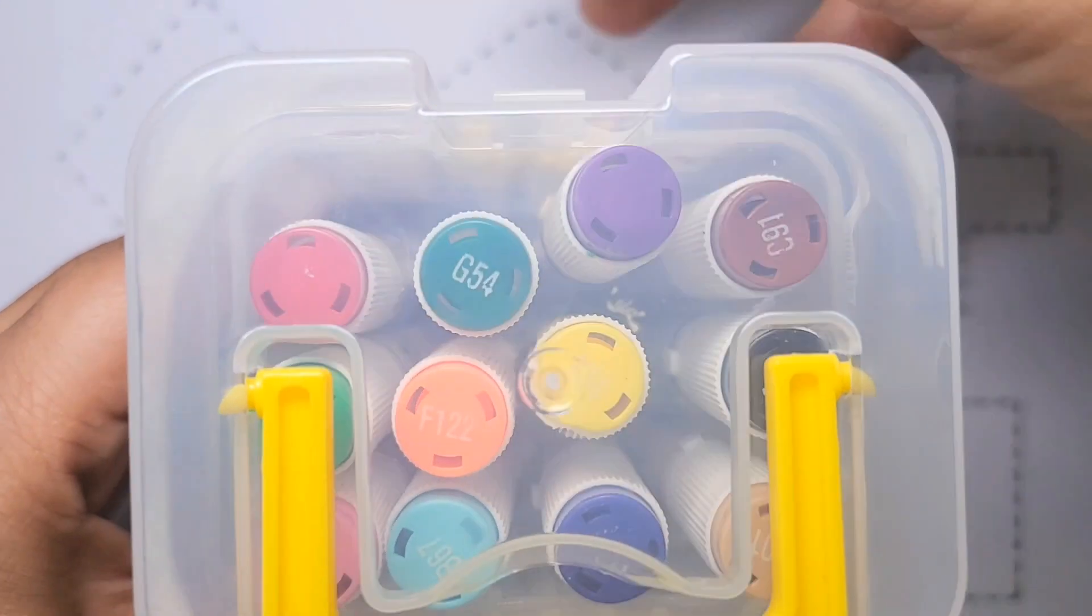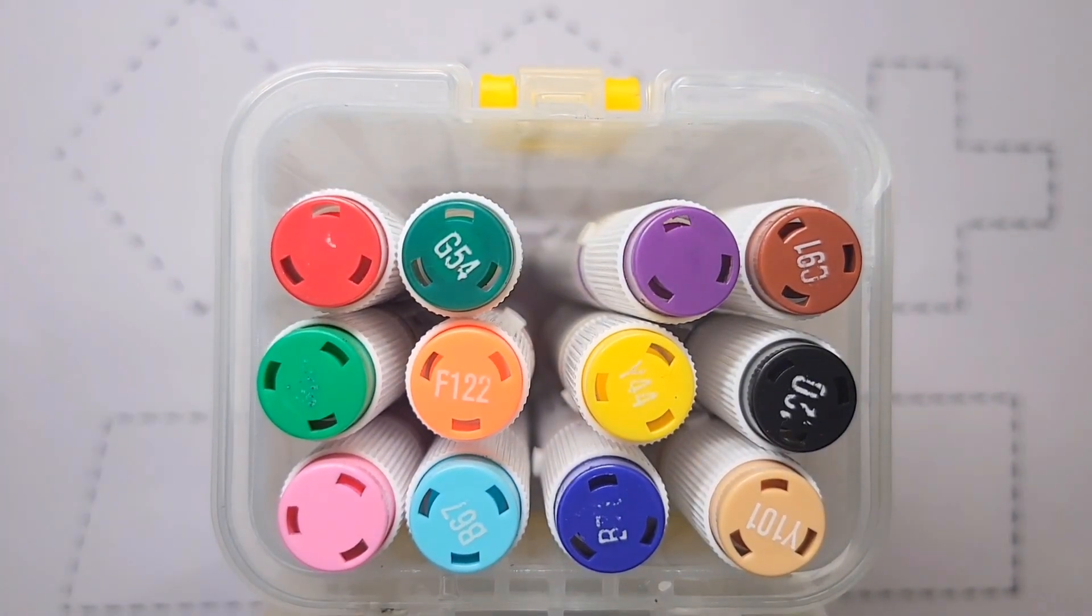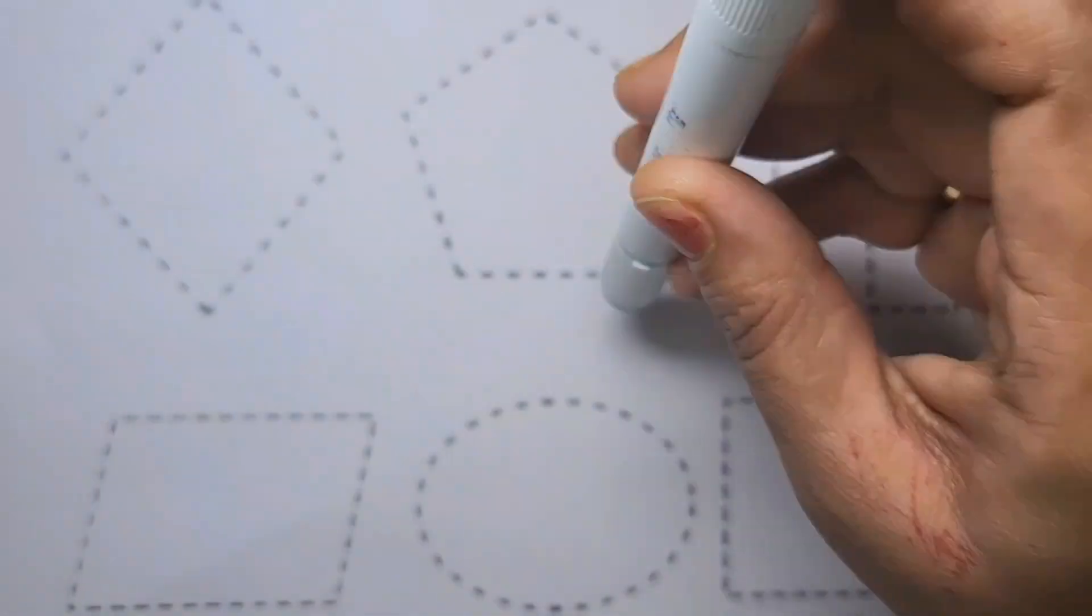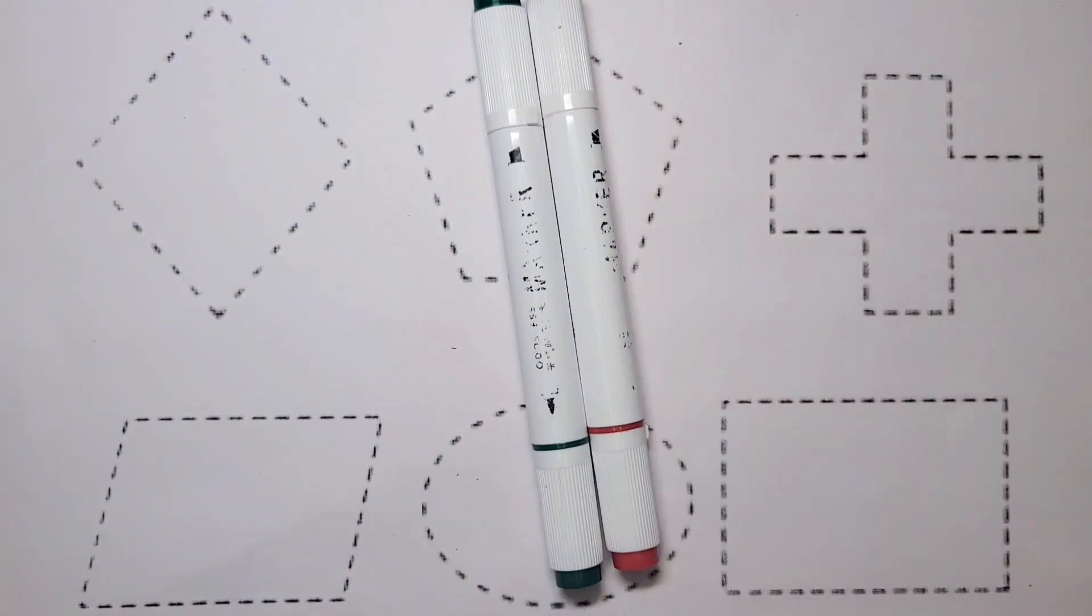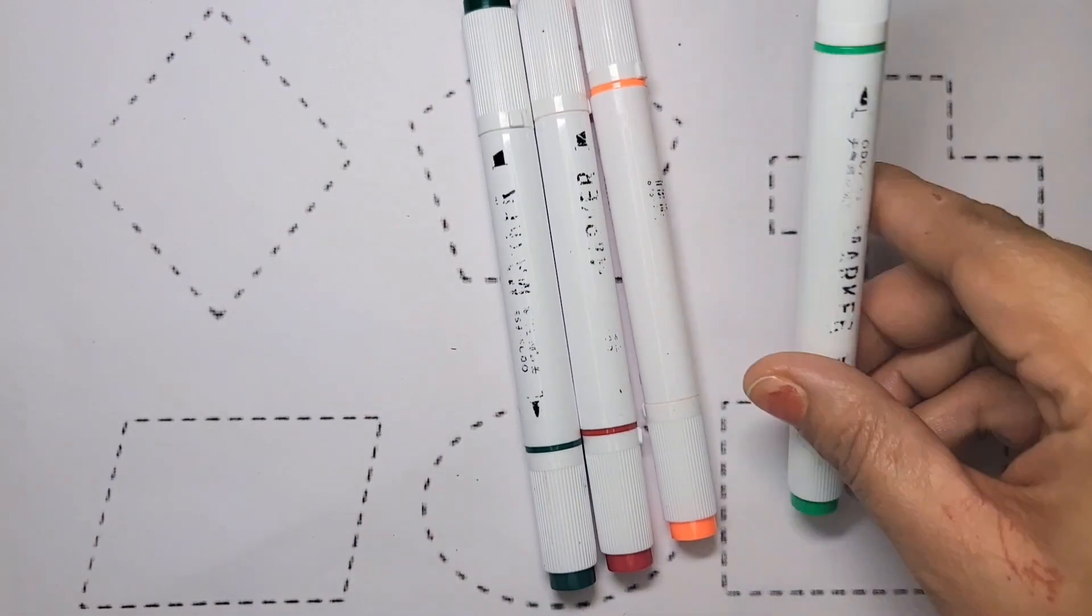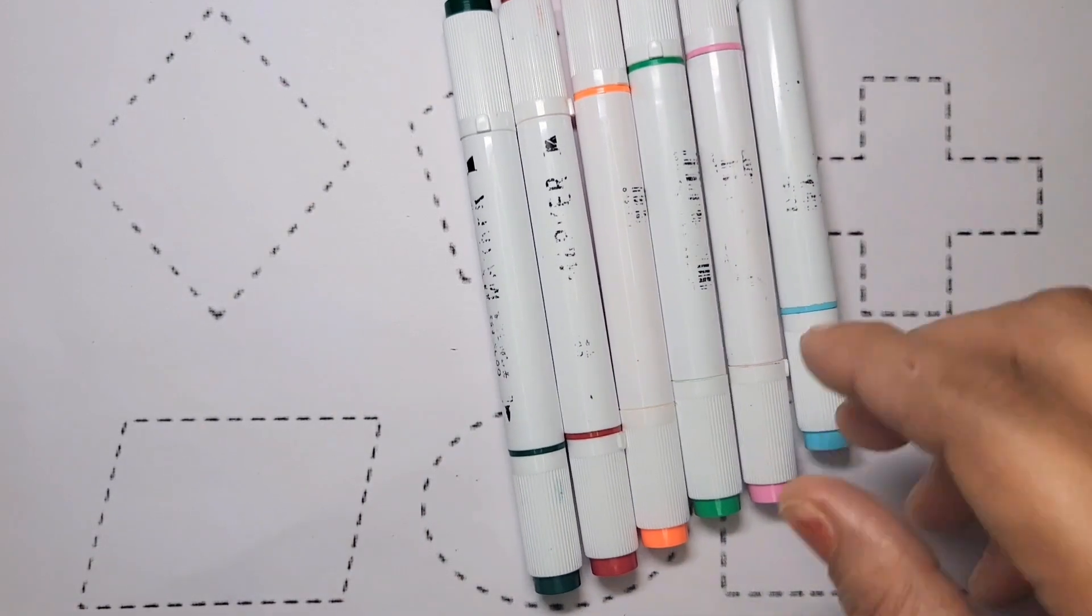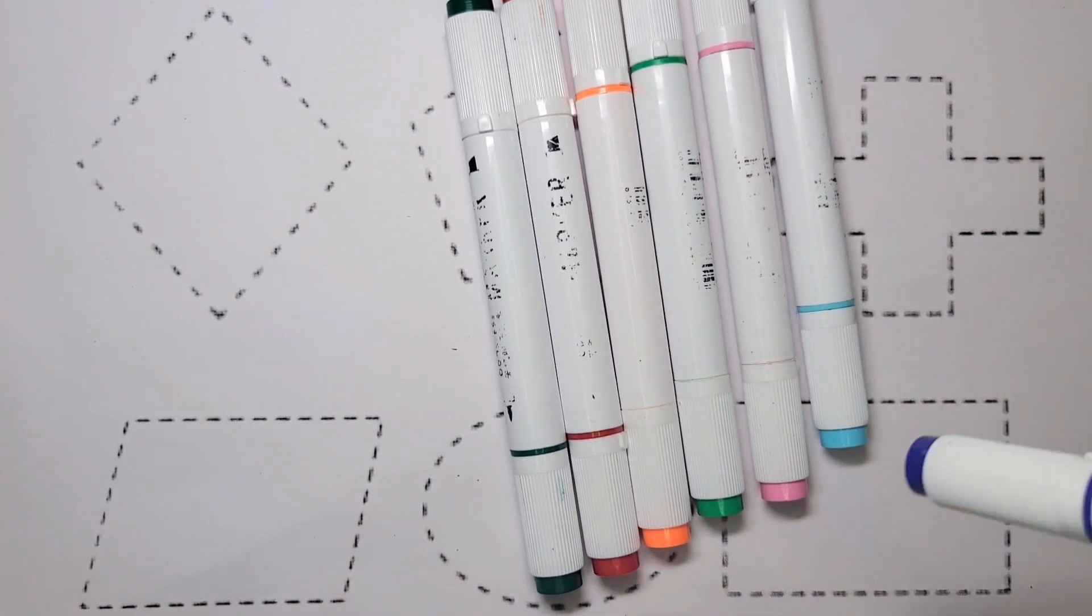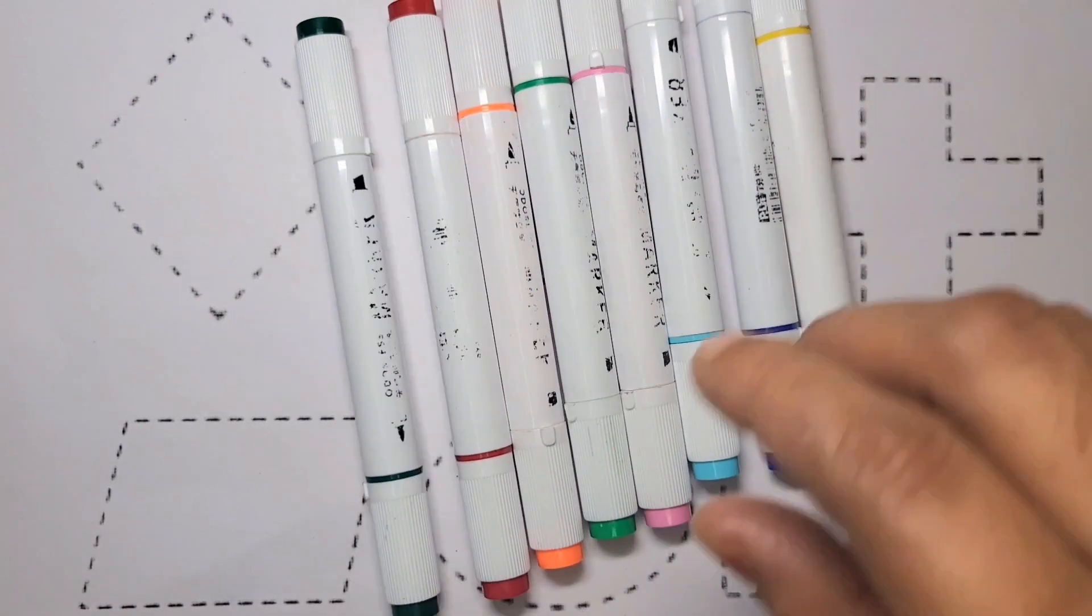Open colors. Wow, there's many colors. Green color, red color, orange color, green color, pink color, light blue color, dark blue color, yellow color.